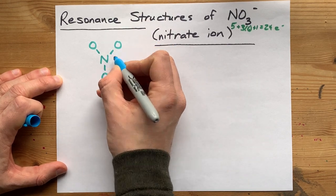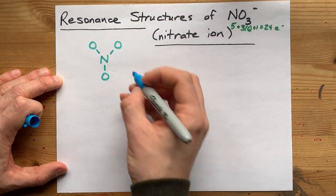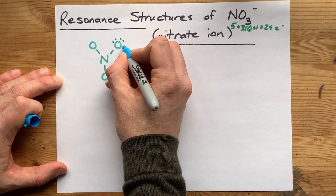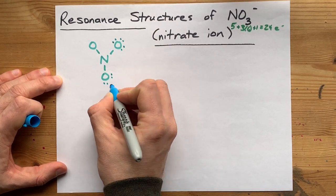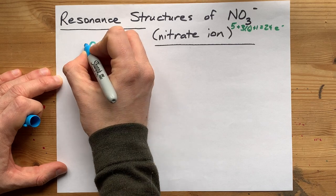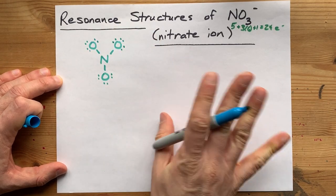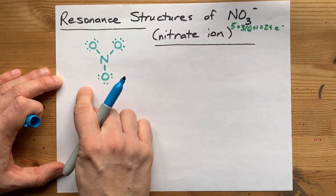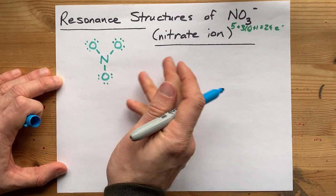Now I've already accounted for 2, 4, 6 electrons, 8, 10, 12, 14, 16, 18, 20, 22, 24. I'm out. That's 24 electrons. I'm not allowed to add any more in here.